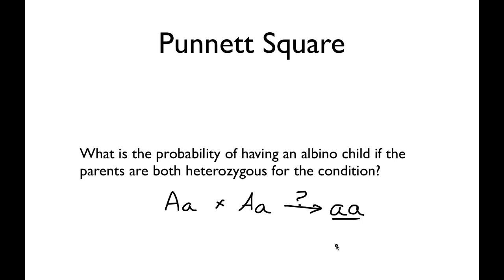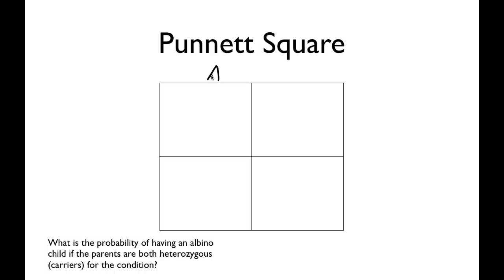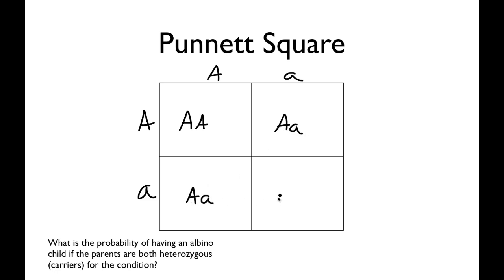That's what the Punnett square is for. Here we have our Punnett square, and the first thing you want to do is sort out the parents. In this case both parents are heterozygous, so they're both the same. One individual will inherit the dominant allele from both parents — homozygous dominant. Then 50% of the offspring will be heterozygous, and here's your box with the homozygous recessive. So the probability of two heterozygous parents producing an albino child is one in four.